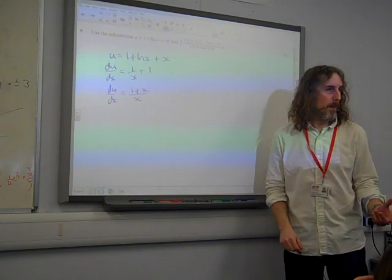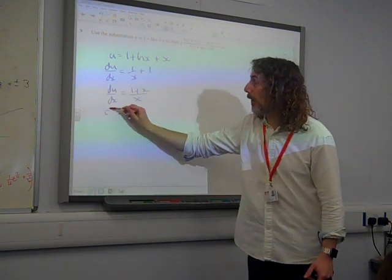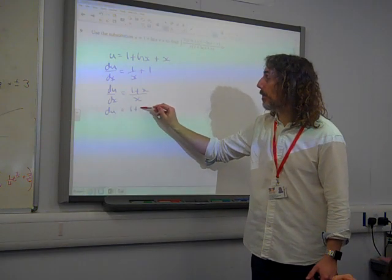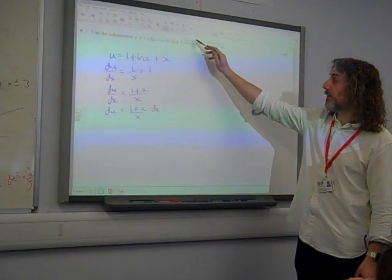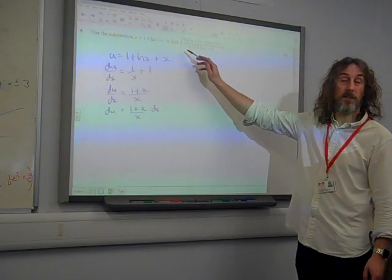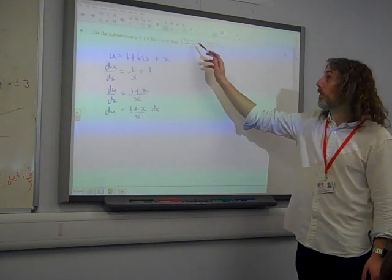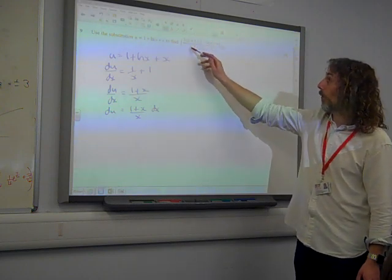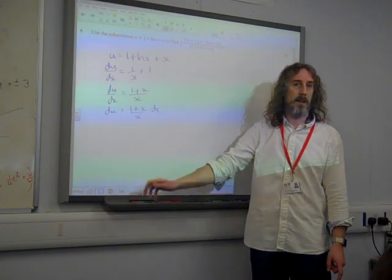Oh, and that immediately leaps out of this thing here because that means that if I think of du as being 1 plus x over x times dx, there is 1 plus x over x dx appearing in my integral. So the substitution is ready, x plus 1 over x dx is equal to du. We're straight in there with that.